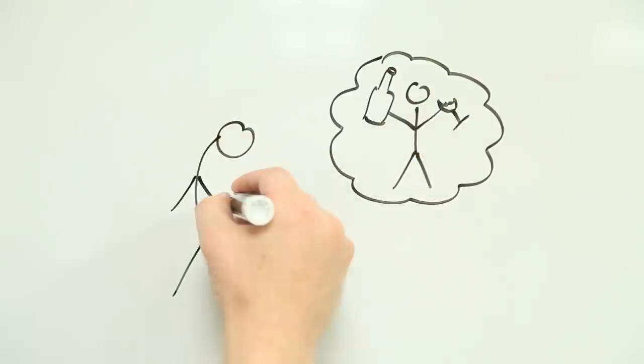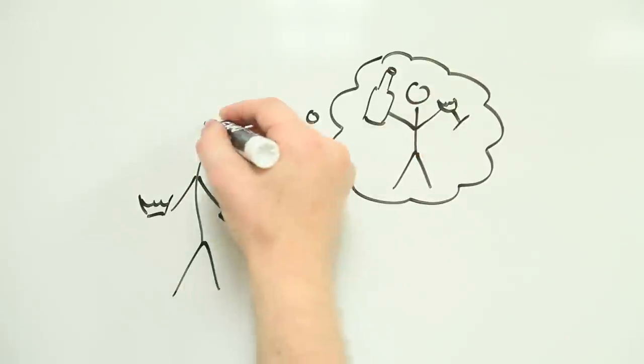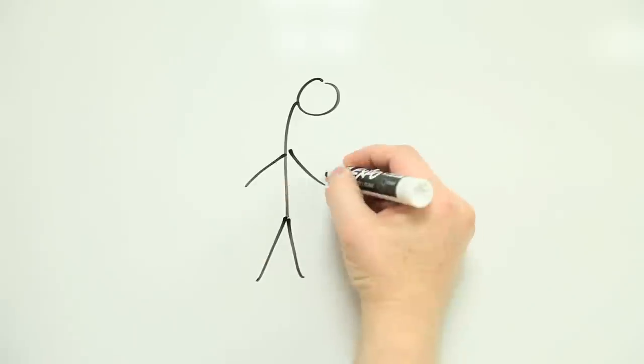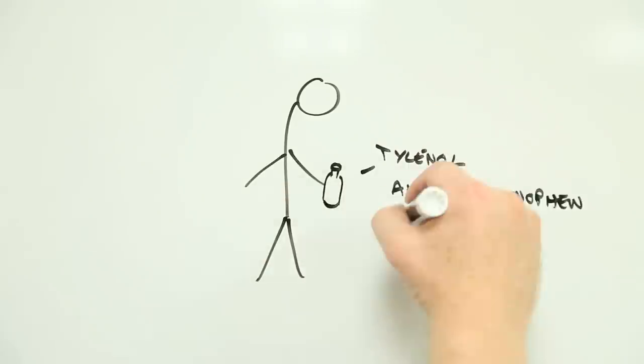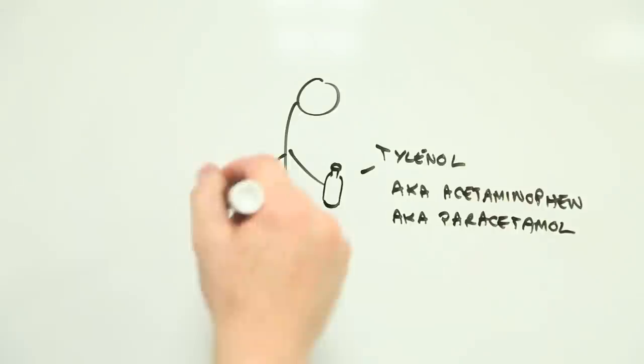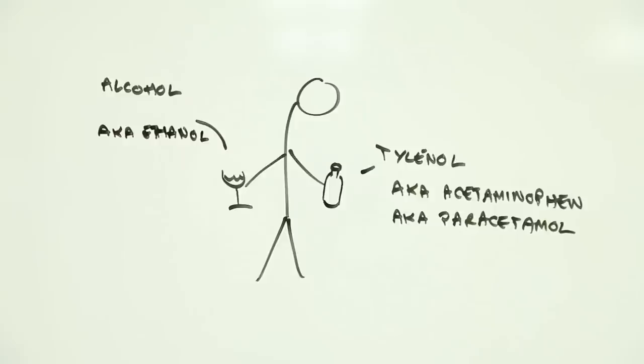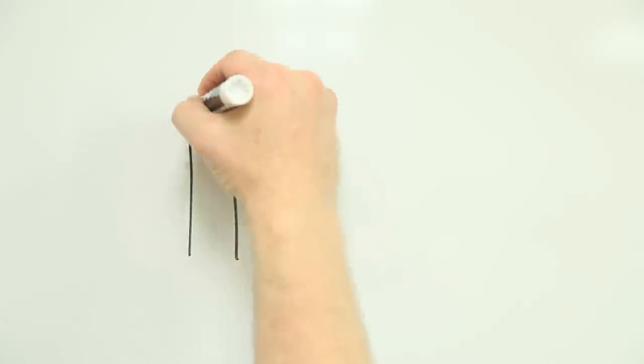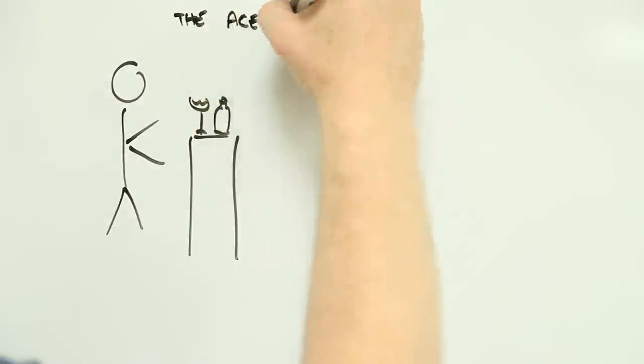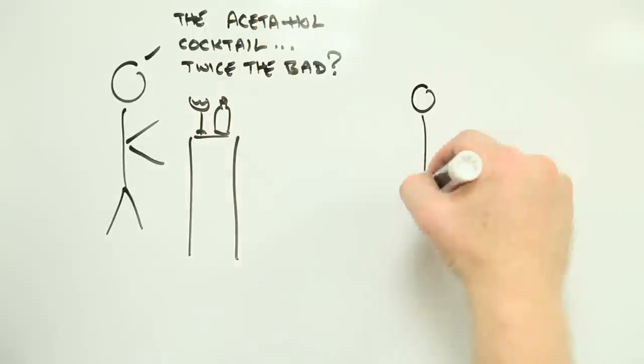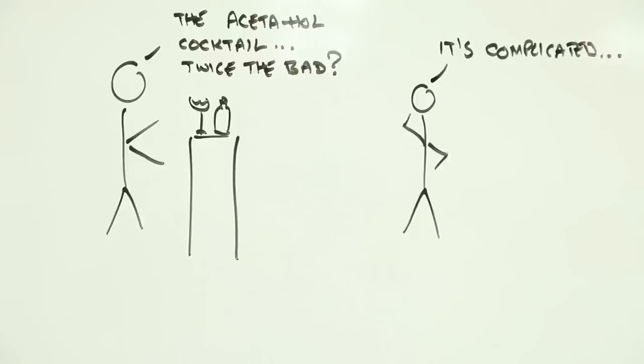Should Tylenol be avoided as a morning after cure for night before drinking? Acetaminophen, the active drug in Tylenol, is bad news for the liver if you take too much of it. The same is true for alcohol, so together, do they join forces to really mess things up for you? In many cases the answer is yes, but interestingly, the science behind this drug cocktail combination is not as obvious as you might think.